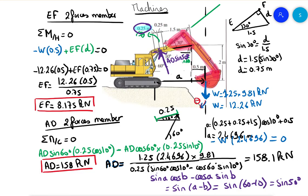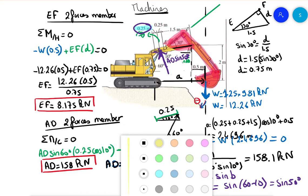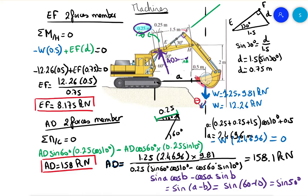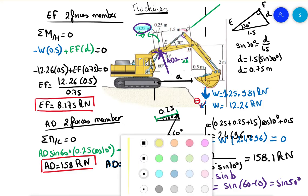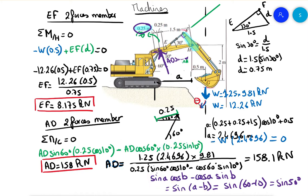To summarize the steps: first, free body diagram of the shovel plus front arm — use the moment about H to find EF. Second, use almost the entire arm assembly and take the moment about C to find the force in AD, since both EF and AD are two-force members so their directions are known. That's it — see you in another video!